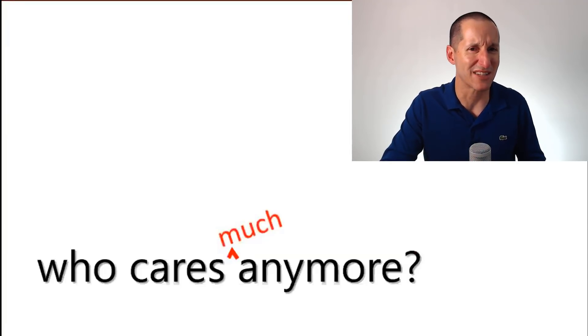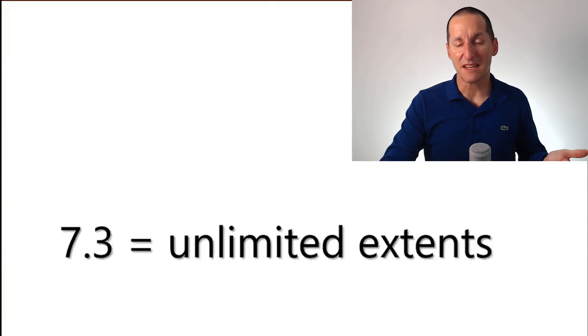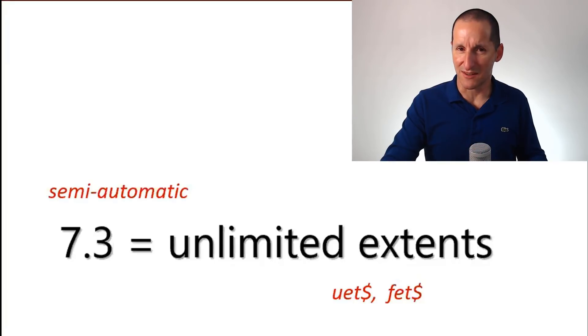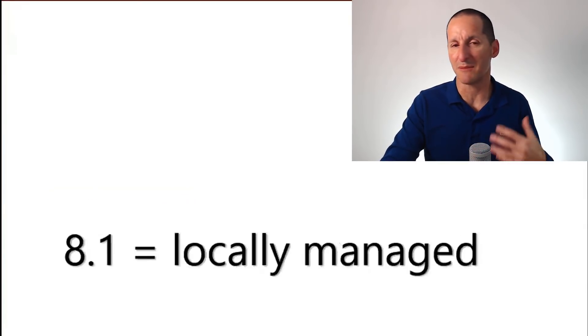If we get billions of extents we probably might have some dramas, but in 7.3, which was 20 years ago, we fixed it. We had unlimited extents. It was sort of semi-automatic because we still used the database dictionary to manage it, so you had to have some care. But then in 8.1 they became locally managed, fully automatic bitmap extents.